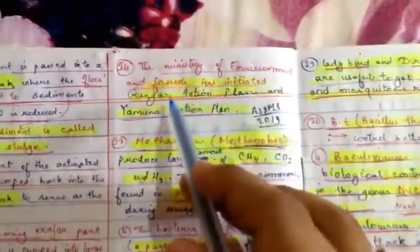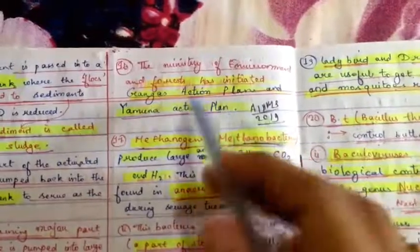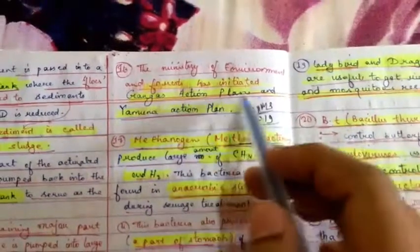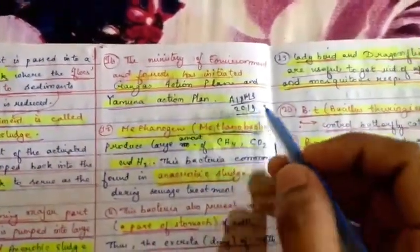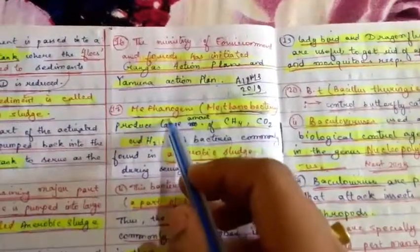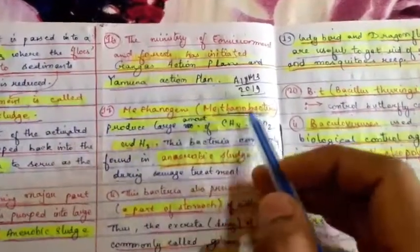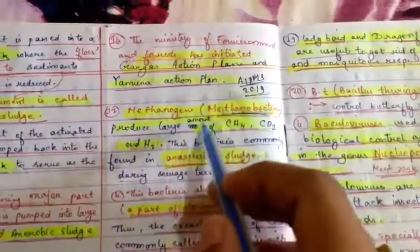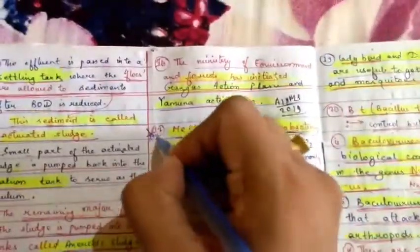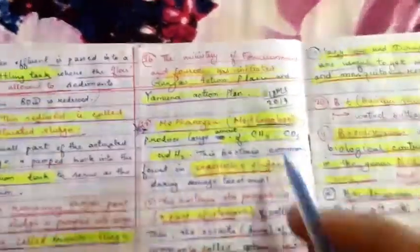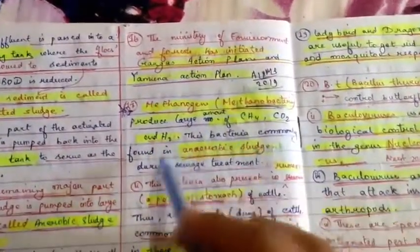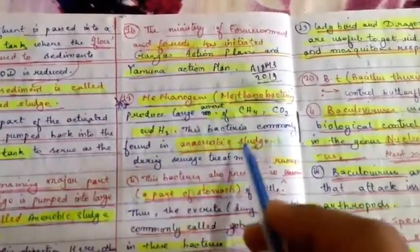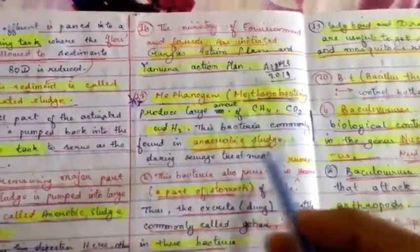The Ministry of Environment and Forest has initiated the Ganga Action Plan and Yamuna Action Plan — AIIMS 2020. Methanogens and methanobacteria produce large amounts of CH4. CH4, CO2, and H2 — bacteria commonly found in anaerobic sludge.